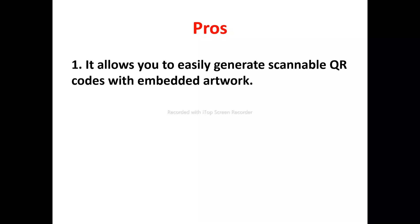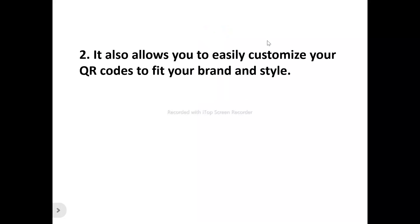For instance, if you are in fitness or a gym business, you can create artwork of someone holding a dumbbell or any brand image you can think of. It allows you to create that scannable QR code with your chosen artwork embedded in it.